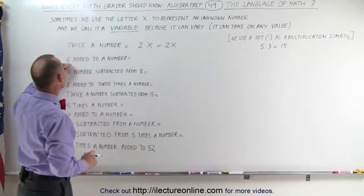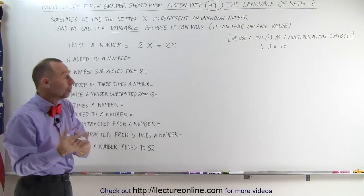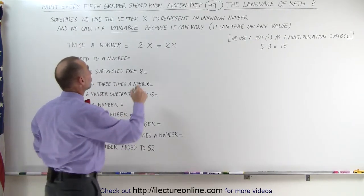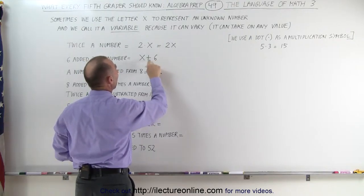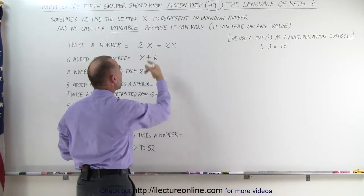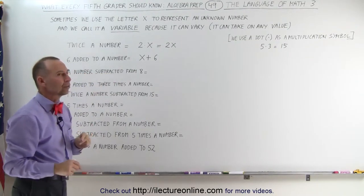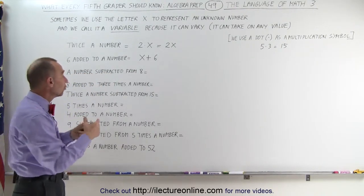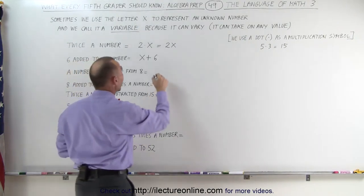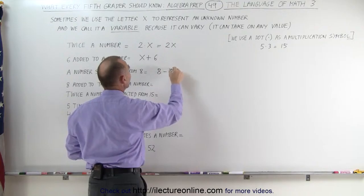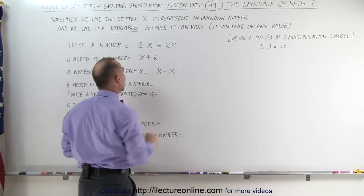The next sentence says '6 added to a number.' Again, we let X be that unknown number, we add 6 to that, so we write X plus 6, which means 6 added to the unknown number X. The next sentence says 'a number subtracted from 8.' So we start with the number 8, subtract the unknown number X from that, and write 8 minus X, meaning the unknown number X subtracted from 8.